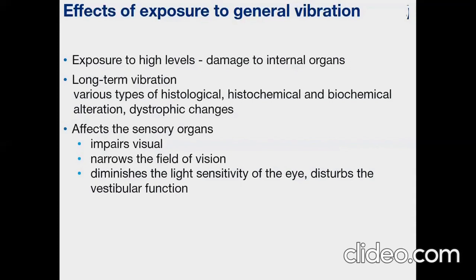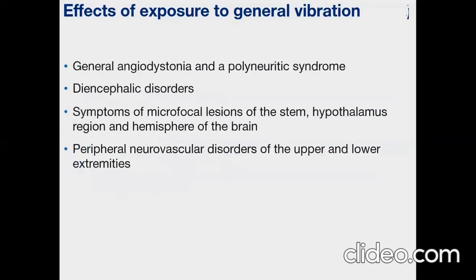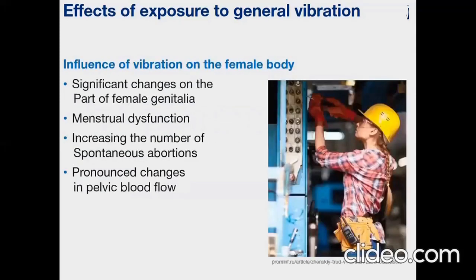Vibration affects the sensory system: it impairs vision, narrows the field of vision, diminishes the light sensitivity of the eye, and disturbs vestibular function. Moreover, the effects of general vibration may cause general angiodystonia and polyneuritic syndrome, encephalic disorders, symptoms of microfocal lesions of the brain, hypothalamic lesions and lesions of cerebral hemispheres, and peripheral neurovascular disorders of the upper and lower extremities. Special attention should be paid to the effect of general vibration on the female body. Prolonged exposure promotes significant changes in the female genitalia — menstrual dysfunction, increasing numbers of spontaneous abortions, and prolonged changes in pelvic blood flow with development of congestive phenomena.